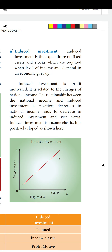Induced investment is related to the change of national income. The relationship between national income and induced investment is always positive. Decrease in national income leads to decrease in induced investment, and increase in national income leads to increase in induced investment. The graph shows investment on one axis and Gross National Product on the other — when national income increases, investment increases; when GNP decreases, investment also decreases.